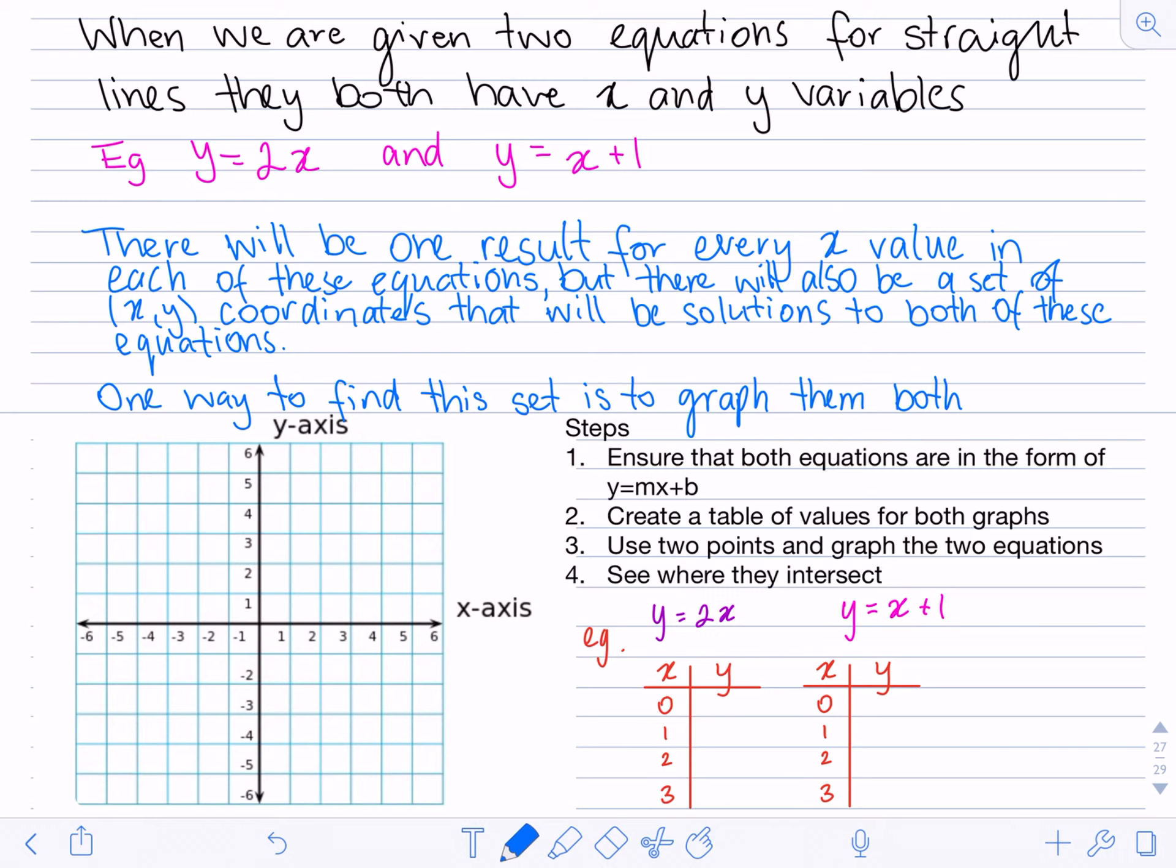There will be one result for every x value in each of these equations. But there will also be a set of x, y coordinates that will be solutions to both of these equations, meaning there'll be a set of x and y numbers or coordinates that will meet both of those equations. One way to find this set is to graph them both.